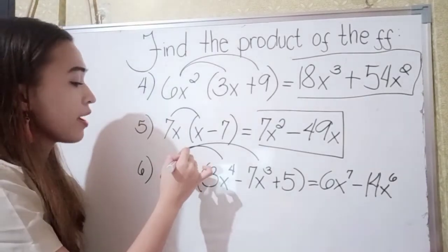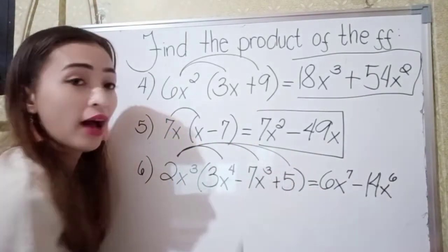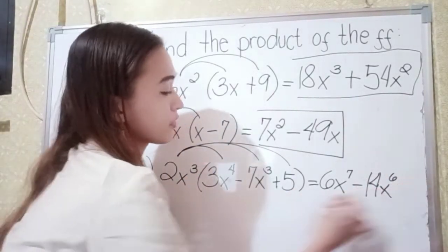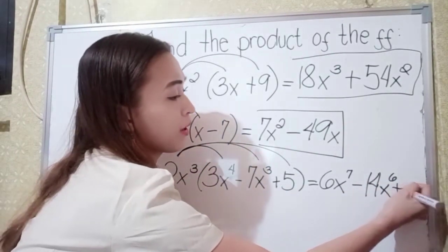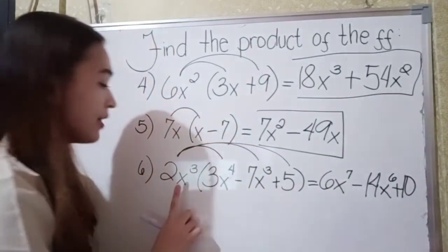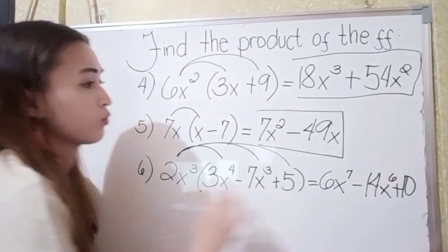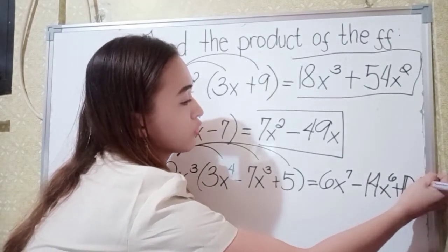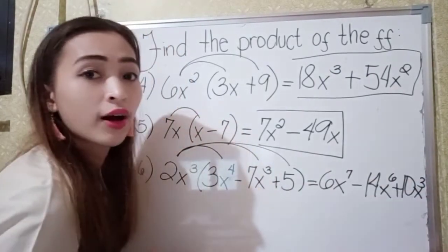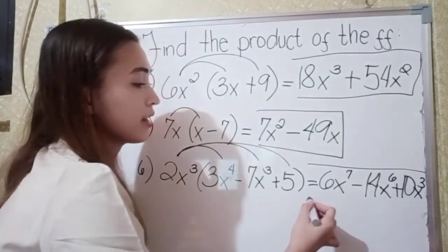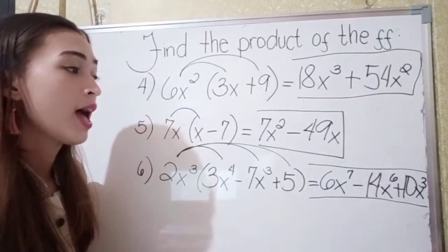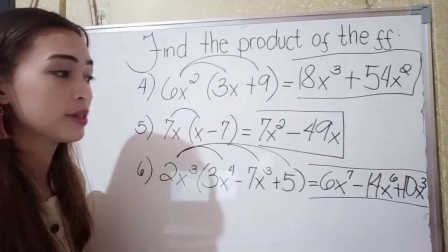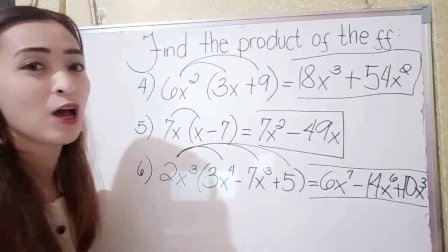Next, 2x cubed times 5: 5 times 2 is 10, this is positive so positive 10, and we just copy x cubed. So our answer in number 6 is 6x to the 7th power minus 14x to the 6th power plus 10x cubed.